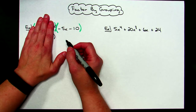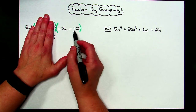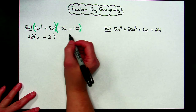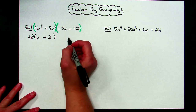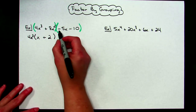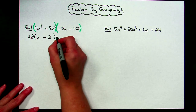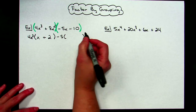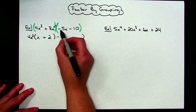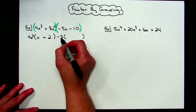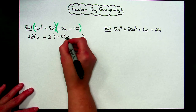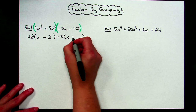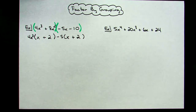Now I'm going to ignore this part of the problem and do the exact same thing to my second binomial. I'm going to look at these numbers and try to take out the greatest common factor. When both of them are negative, almost every time you'll be pulling out a negative. So out of five and ten, I can pull out a negative five. I'm going to need my set of parentheses here because I will have to put my binomial in there and what's left.